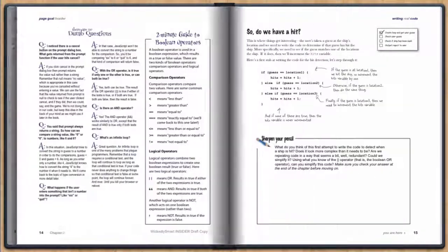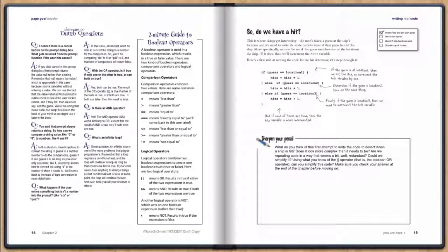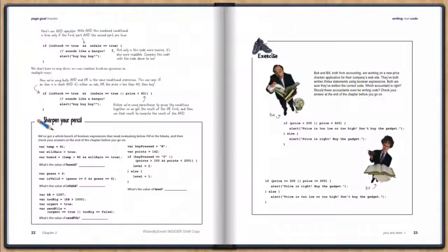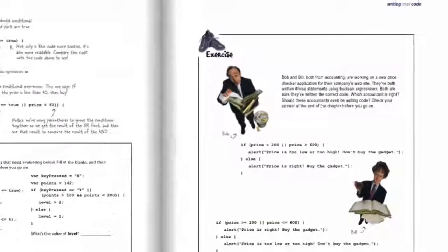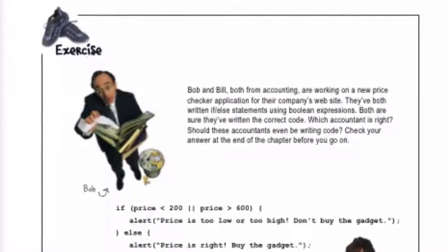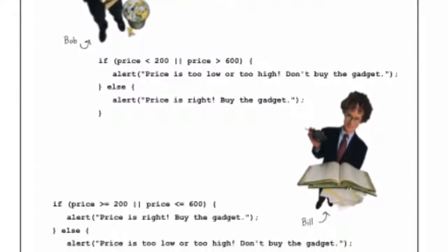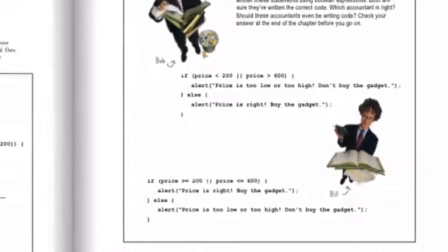We're also going to get into some of the more advanced Boolean operators and conditionals in the chapter. Like, how do we piece together more advanced logic operations? And of course, we've got a couple of puzzles in here too. We've got a couple of accountants who are trying their hand at code, and one of them isn't so great at it. So it's going to be your job to help figure out who's got the correct code.